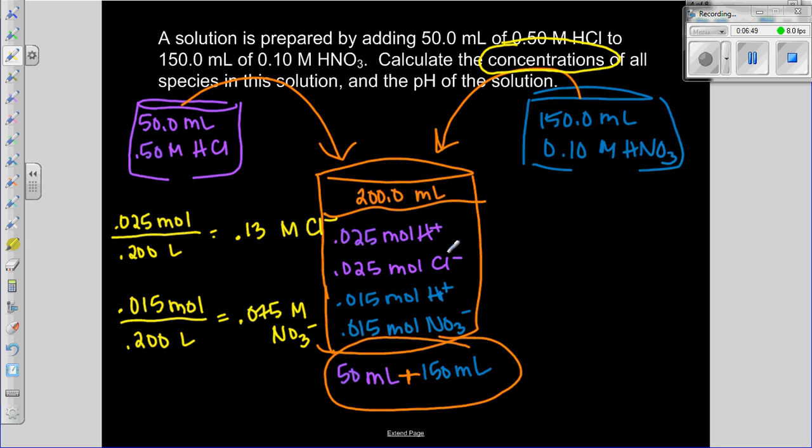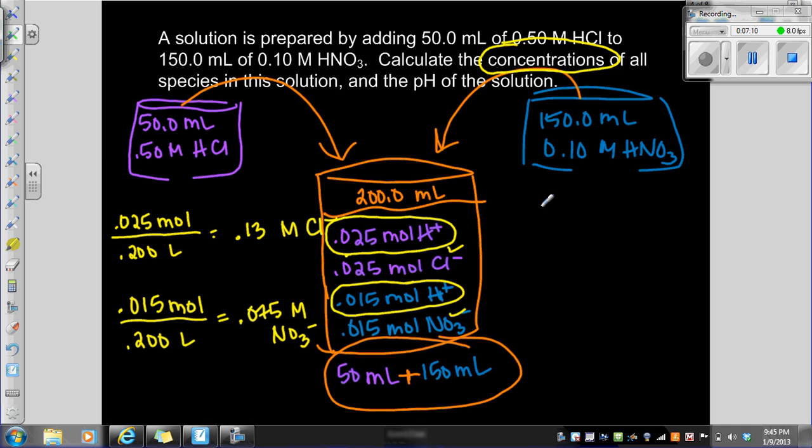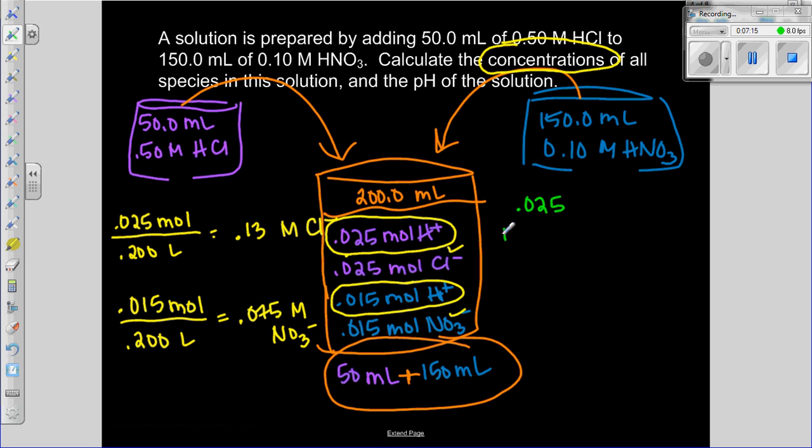I have hydrogen ions that came from the HCl and hydrogen ions from the nitric acid, and I want to add them together. So 0.025 plus 0.015 gives 0.040 moles. Now I want to get concentration, so I divide that by 0.2, which gives 0.20 molar H plus.